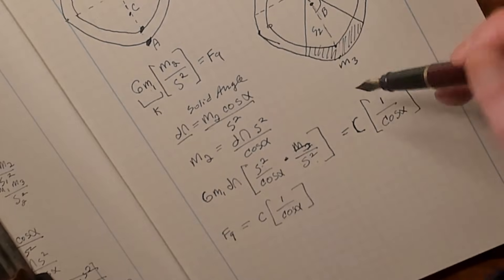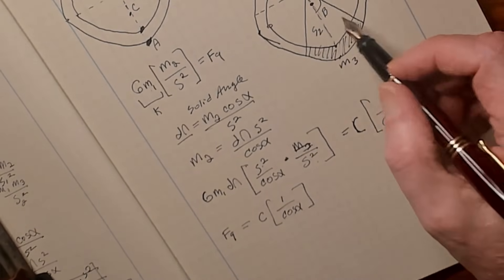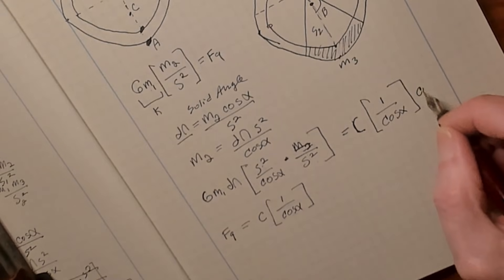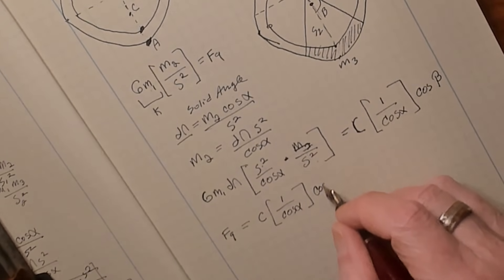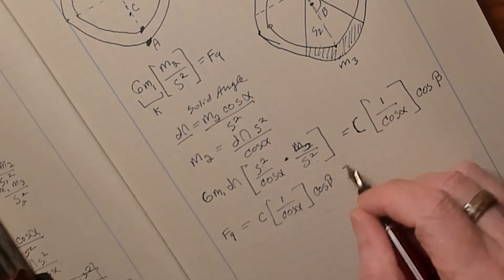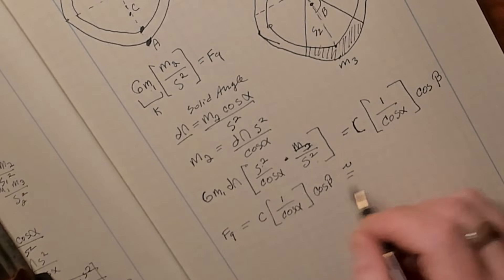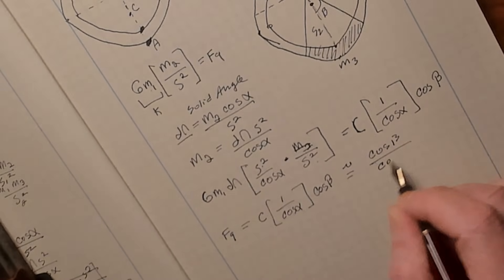We're only interested in the gravity that pulls towards the center. So we also have to take the cosine of angle beta. So our final answer is going to be the gravity is proportional to the cosine of beta over the cosine of alpha.